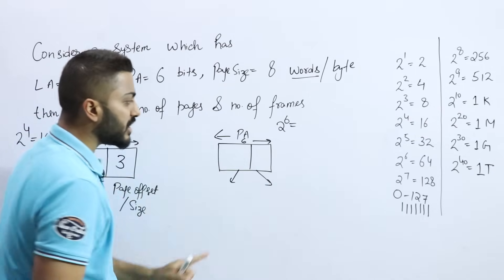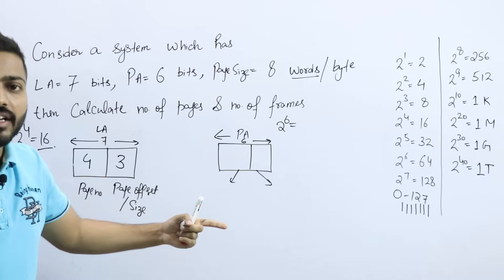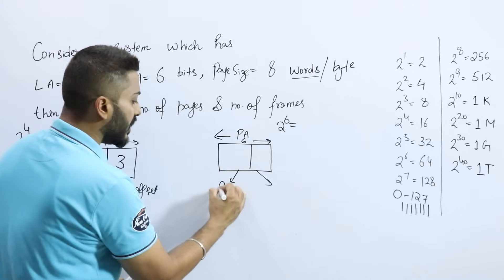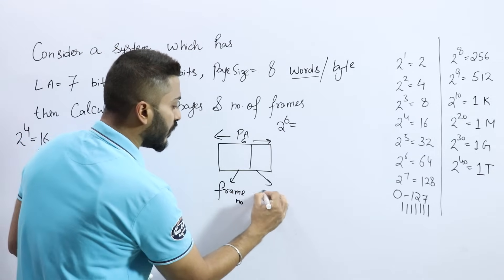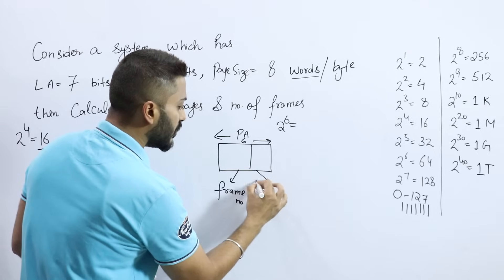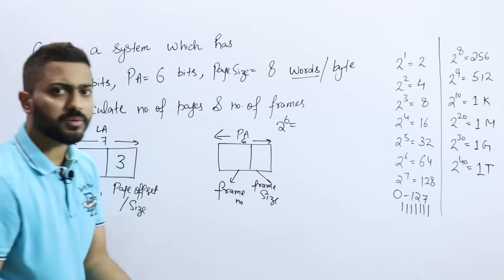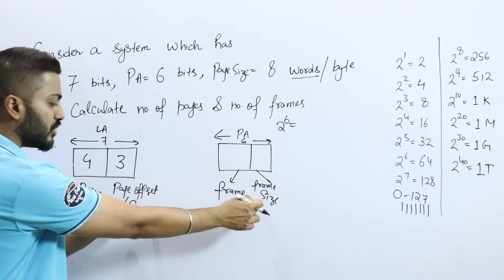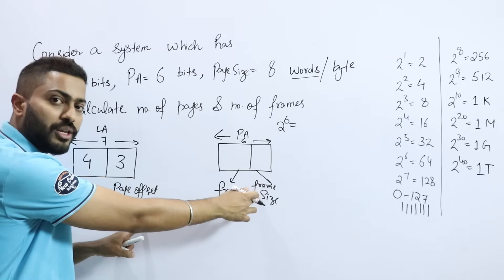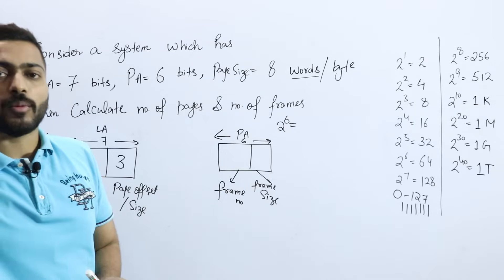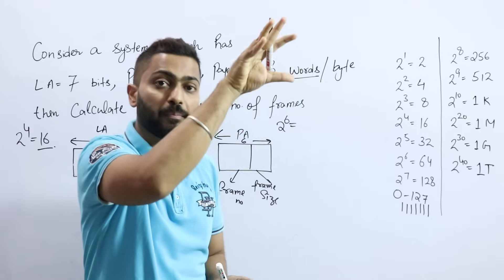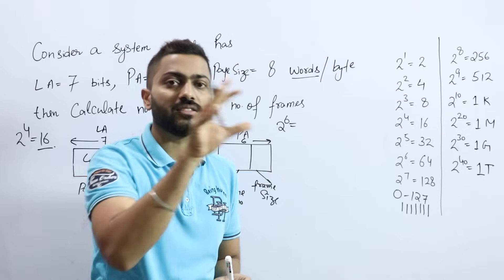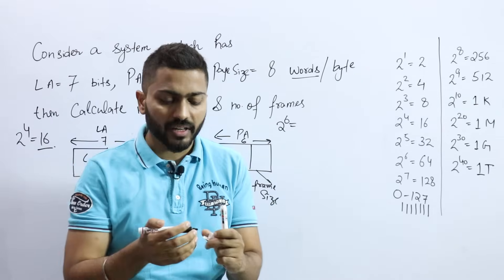The physical address is also comprised of two things: the frame number and the frame offset. The frame size is always equal to the page size — this is a key concept. Since a page must fit exactly into a frame of main memory, frame size equals page size.